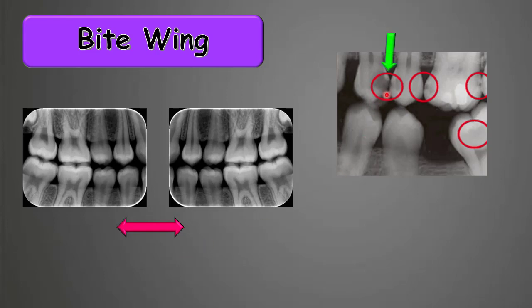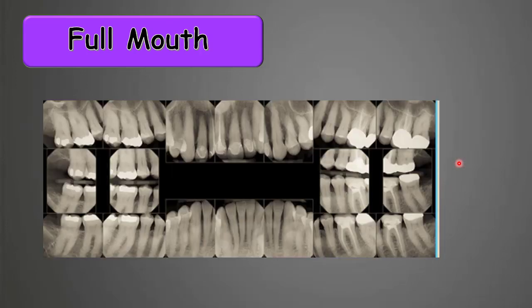Bite wings are routinely taken for detecting caries between the teeth that may be hiding from the dentist, or for assessing bone levels — especially in patients with periodontal disease or gum disease that can cause bone loss. So we can detect the bone level in the bite wing radiography.